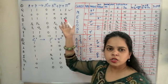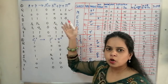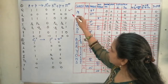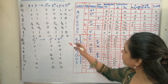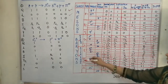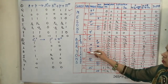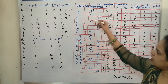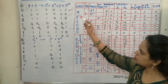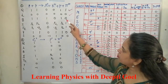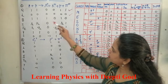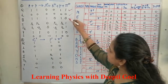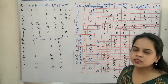For lepton number: leptons include electrons, positrons, mu minus, mu positive, and neutrinos. There are none present in this reaction, so the lepton number is 0 on both sides — conserved. For baryon number: proton, neutron, and lambda are in the baryon family, while K and pi particles are mesons with baryon number 0. The baryon number is 2 on the left-hand side and 2 on the right-hand side — conserved.